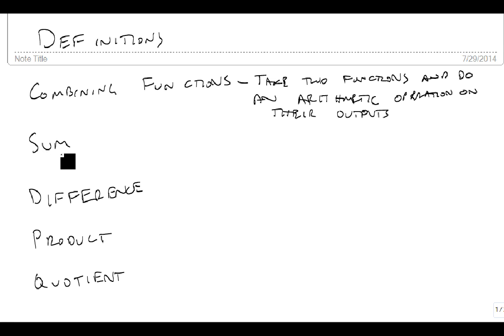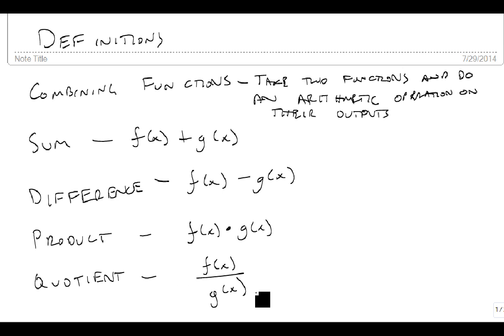So for instance, if we say we have the sum of two functions, that means we took f of x and added it to g of x. The difference functions are f of x minus g of x, product is f of x times g of x, and the quotient is f of x divided by g of x.